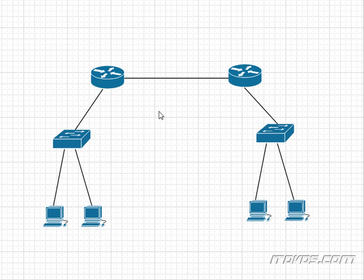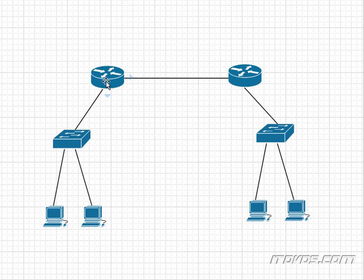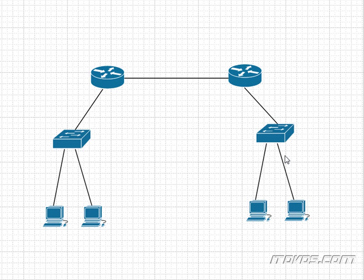Now let's take a more advanced diagram. How many collision domains do we have? Let's count them out. We have one — this link going to this switch port. Two — this link going to this switch port. Three — the switch to the router. Four — router to router, because routers do break up collision domains. Five — router to switch. Six and seven. Seven total collision domains.